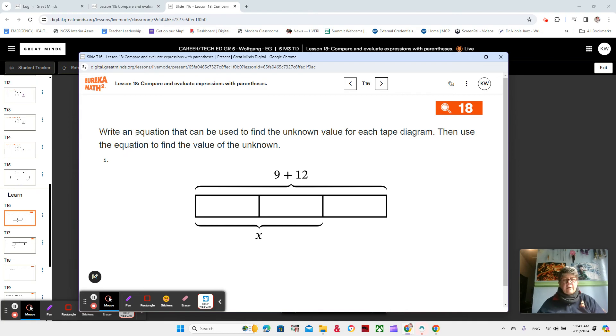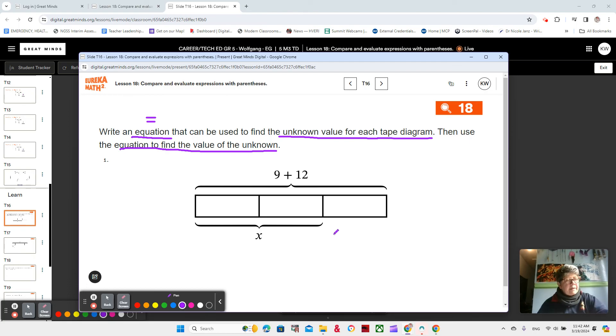And the directions say, write an equation that can be used to find the unknown value for each tape diagram. So an equation, it's going to have an equal sign, right? And we're trying to find an unknown value for each tape diagram and then use the equation to find the value of the unknown. So basically, we're going to write an equation based on our tape diagram, and we're going to solve it for the thing that we don't know, the unknown.